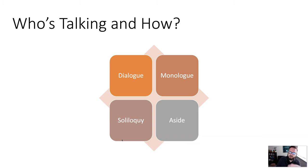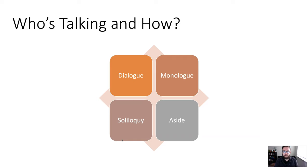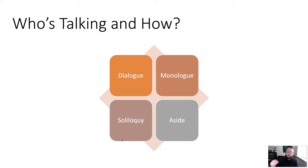Monologues are when one character delivers an extended speech while other characters are listening. We see this in a lot of movies — particularly James Bond films, where the villain talks at length about his great plan. That's monologuing: speaking at length to other characters who are present.